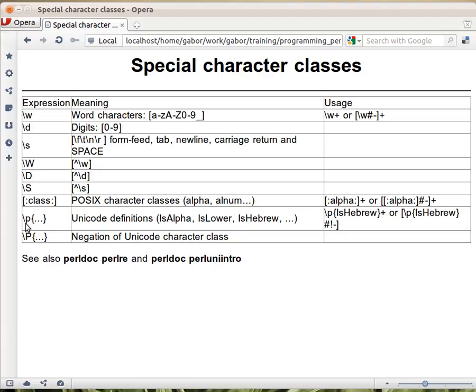The way you do that is to say backslash p and then in curly braces you say the name that Unicode defines. So again you have to look it up in the Unicode specification, but you can use that and this will mean exactly one character of the type that was described here. And capital P would just be the negation of that character class.